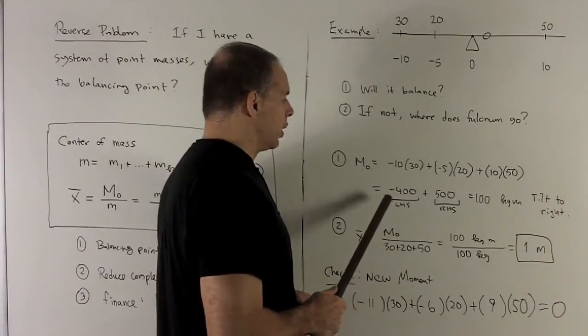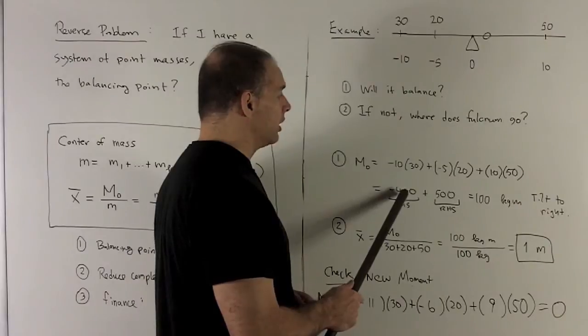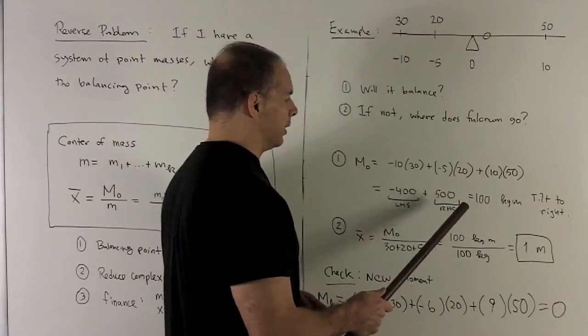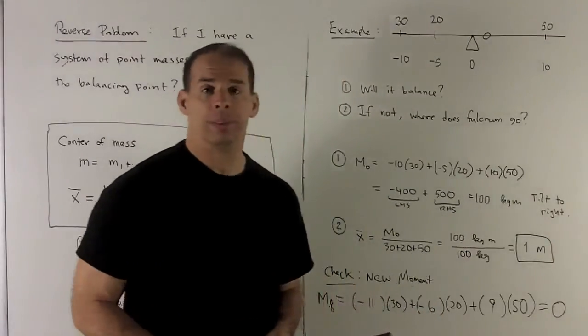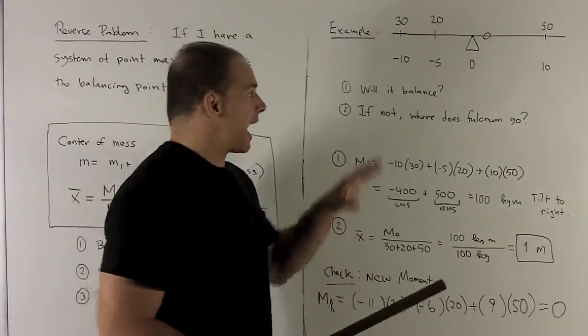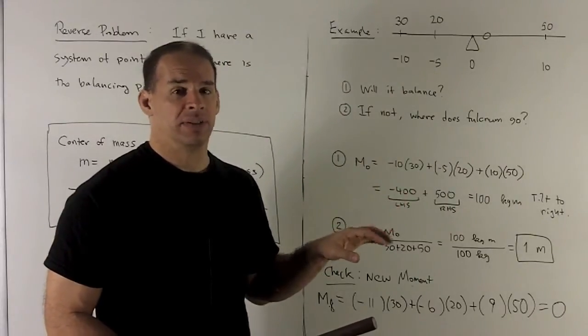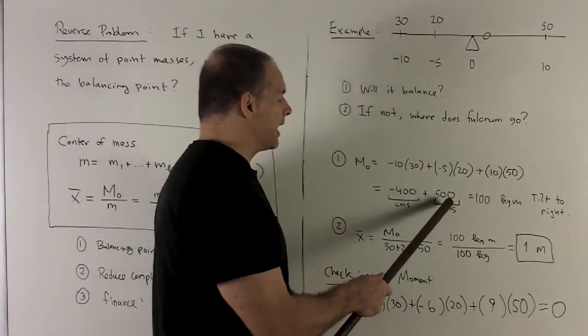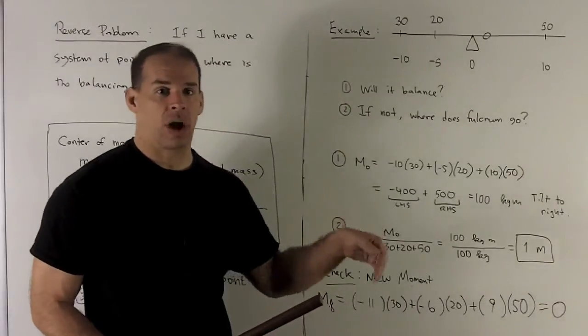We put our numbers in. We see that on the left-hand side, we're going to get a moment of minus 400 kilogram meters, and then on the right side, we're going to have 500 kilogram meters. So when I add these together, I get 100 kilogram meters, and we note this is not equal to zero, so this system isn't balanced. When gravity acts on this, it's going to tilt to one direction or the other. To figure out that direction, we just look and see which side has the greater moment. That's going to be the right-hand side, forgetting about the minus sign. So this system is going to tilt to the right.